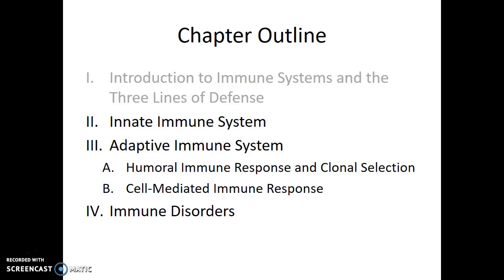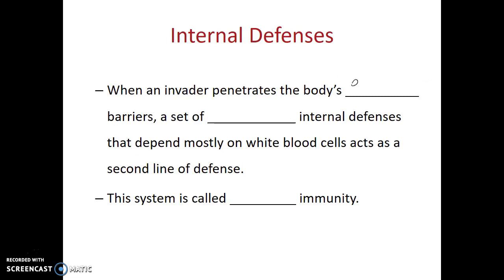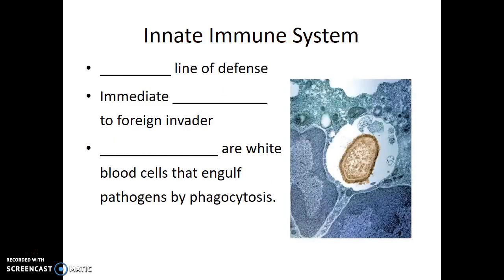Our second line of defense is the innate immune system. When invaders penetrate the body's external barriers, a set of nonspecific internal defenses that depend mostly on white blood cells act as a second line of defense — known as innate immunity. It is an immediate response to foreign invaders; as soon as the body detects that the outer barriers have been breached, the second line of defense is activated. A major component is a particular category of white blood cells known as macrophages.